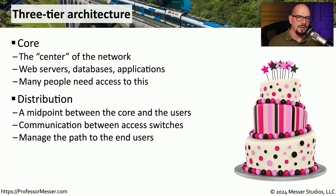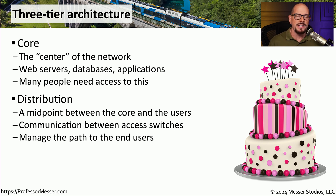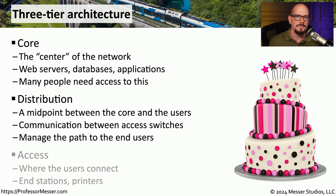The second tier in a three-tiered architecture is the distribution layer. This distribution is the midpoint between the users and those core resources. It is usually a series of switches that provides redundancy and connectivity for those users to access those critical resources.